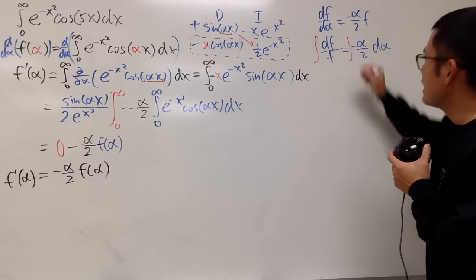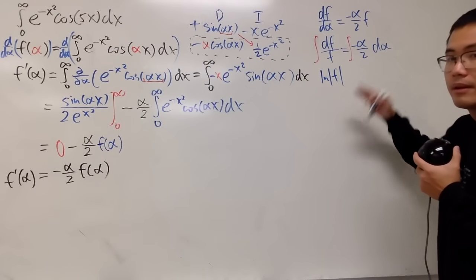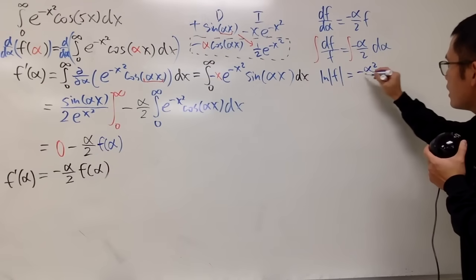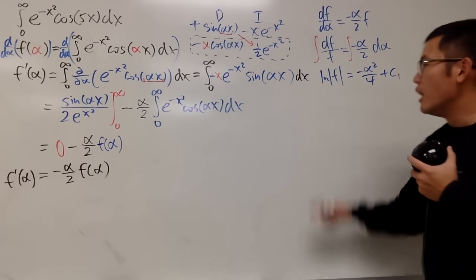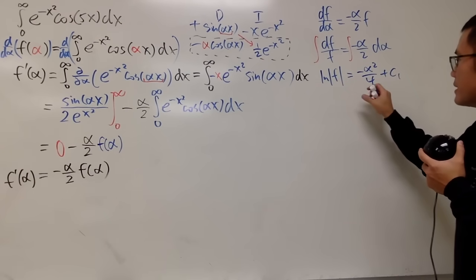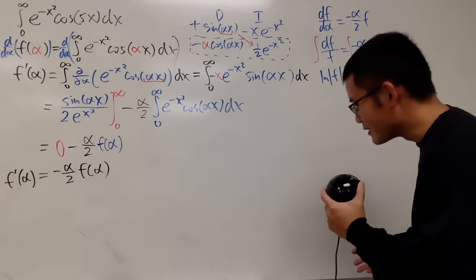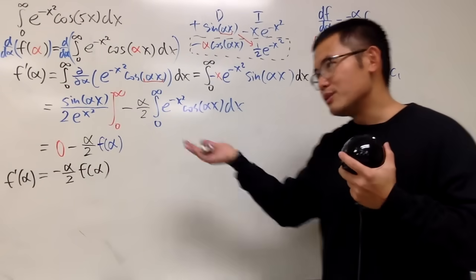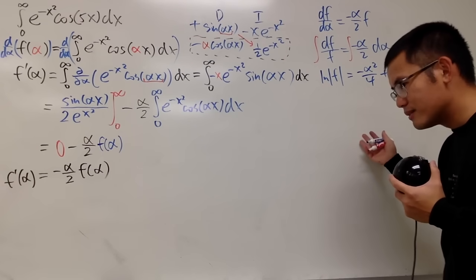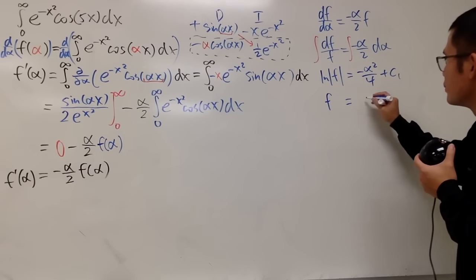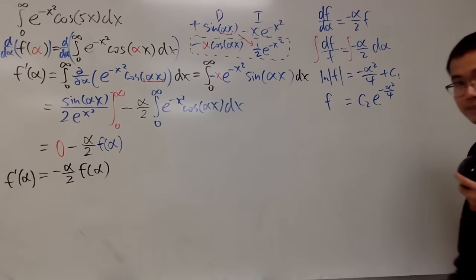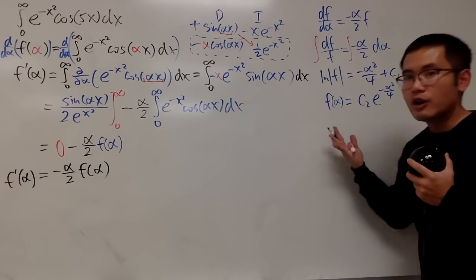Integrating both sides: the left-hand side gives ln of the absolute value of f, and the right-hand side gives negative alpha squared over 4, plus a constant C₁. To isolate f, we exponentiate both sides: f equals C₂ times e to the negative alpha squared over 4, where C₂ absorbs the constant e to the C₁ along with the plus-or-minus from the absolute value. This is our f of alpha — we've solved the differential equation.